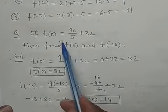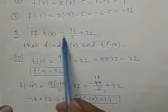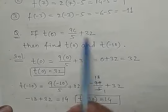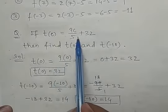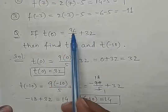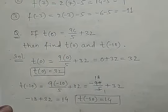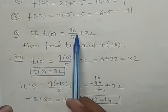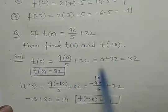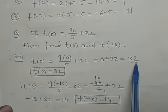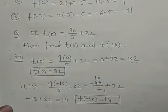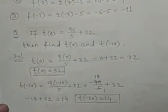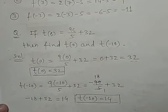Iska matlab yeh hai — t(c) = 9c/5 + 32 — yane aap c ki different values ke liye is function ki value nikal saktay ho. Jab Celsius ki value 0 hogi to Fahrenheit 32 degree aayega. Ye function Fahrenheit nikalne ke liye hai — jab do alag temperature scales hote hain, Celsius ki alag alag values ke liye Fahrenheit me values nikal sakte hain.